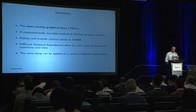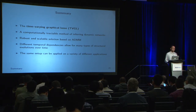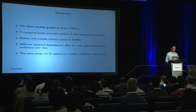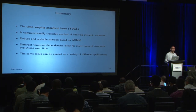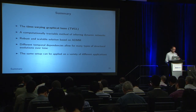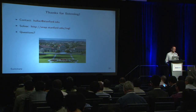Overall, our method — the time-varying graphical lasso — is a scalable and computationally tractable way of learning time-varying networks from sensor data. We developed a fast algorithm based on the alternating direction method of multipliers and showed how to encode different types of evolutionary structures in the same framework, applying it to several case studies. Happy to take any questions, and thanks for listening.